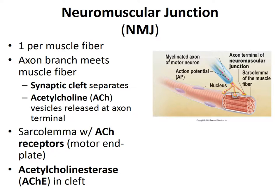Acetylcholine then diffuses across the synaptic cleft and attaches to receptors, also known as ion channels, on a highly folded region of the sarcolemma called the motor end plate. The binding of acetylcholine to the channels causes the channel to open, producing an influx of sodium ions into the muscle cell, resulting in depolarization of the sarcolemma and eventually leading to an action potential and contraction.